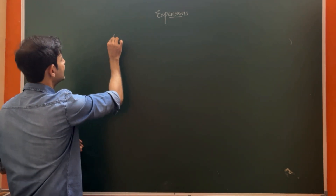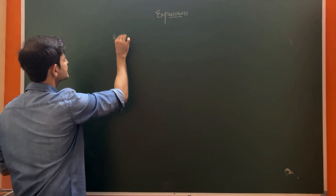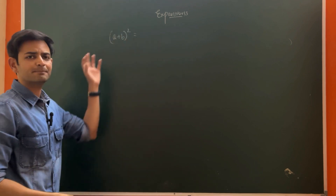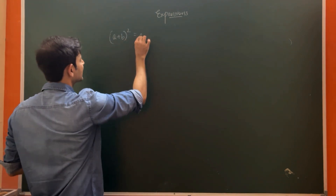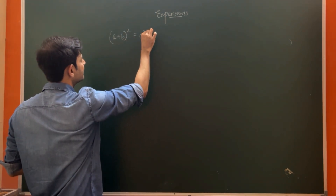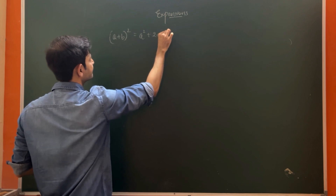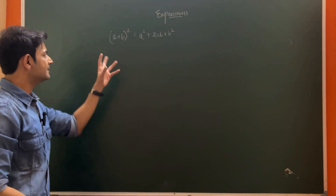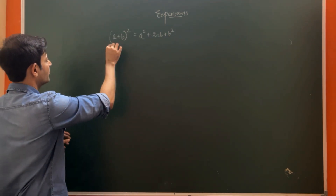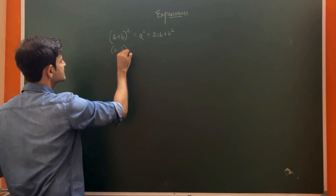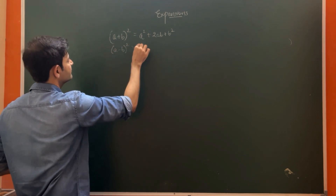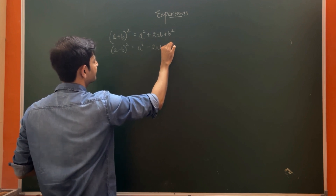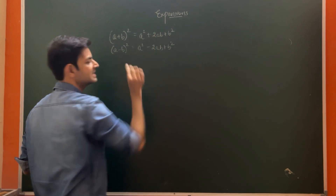First we have (a + b) whole squared. When you expand it, we all know this formula: a squared plus 2ab plus b squared. Similarly, we have the formula for (a - b) whole squared, which is equal to a squared minus 2ab plus b squared.